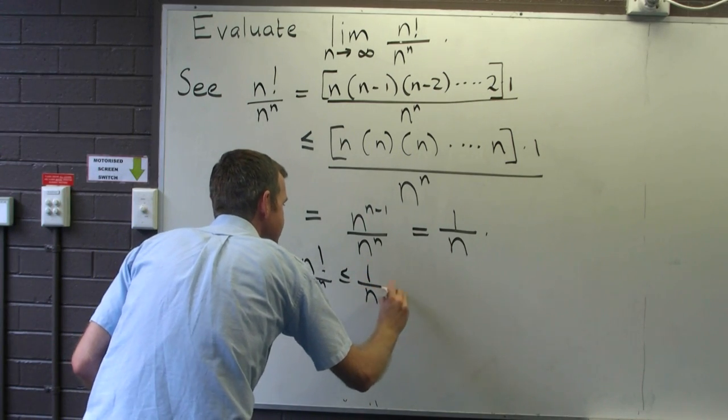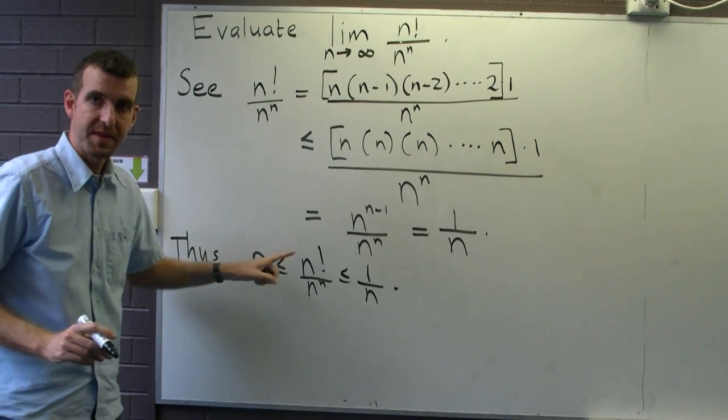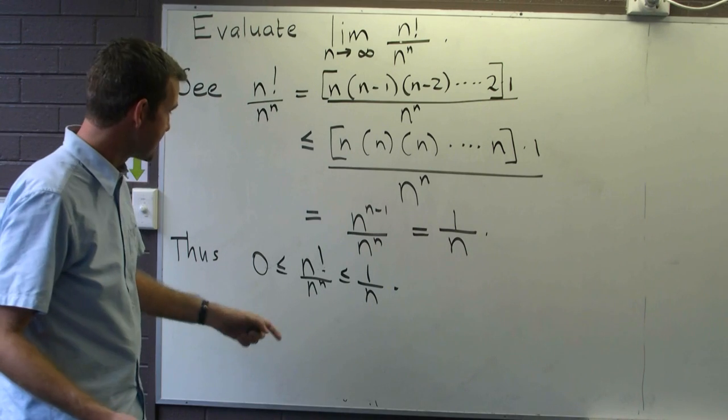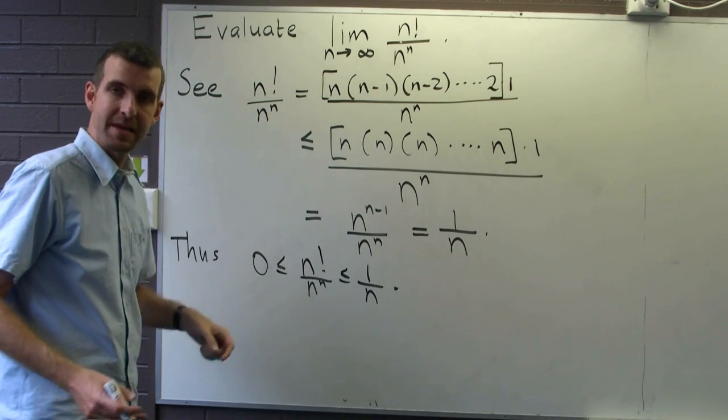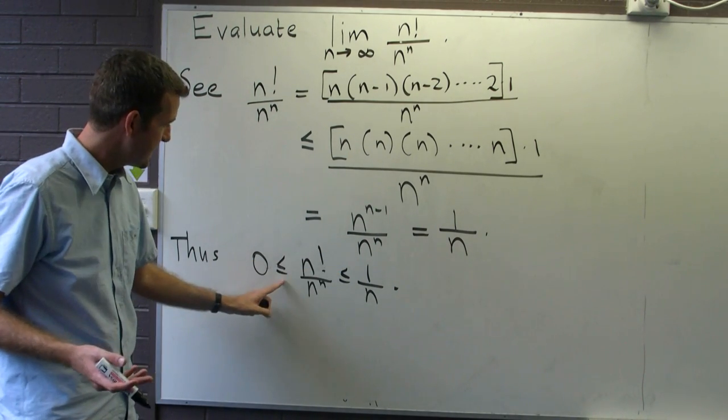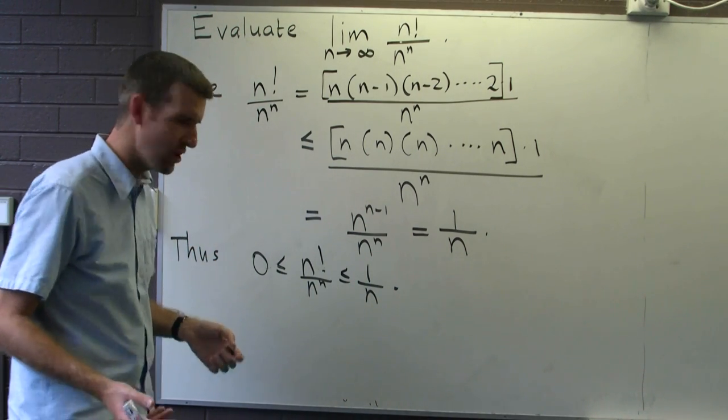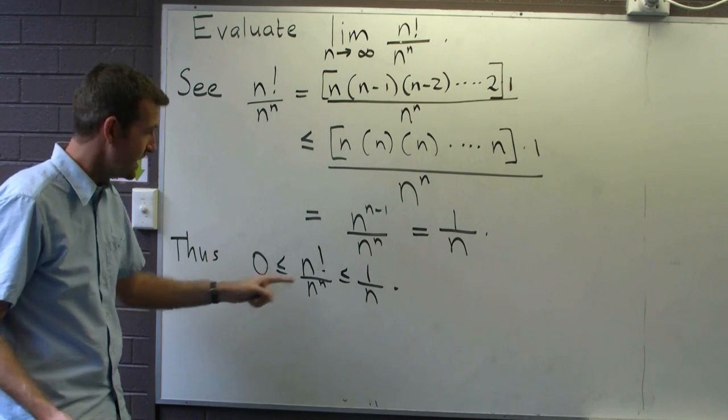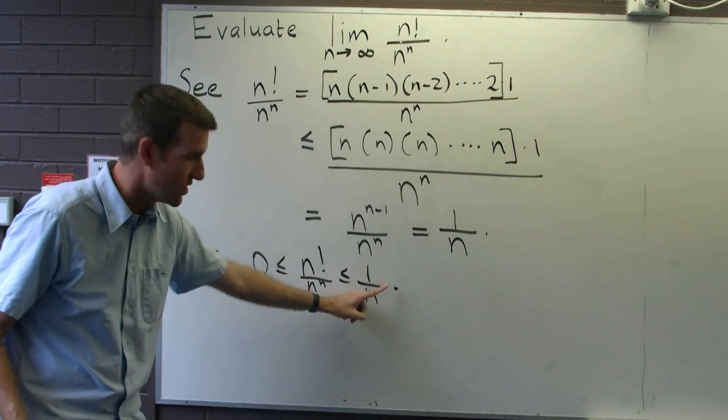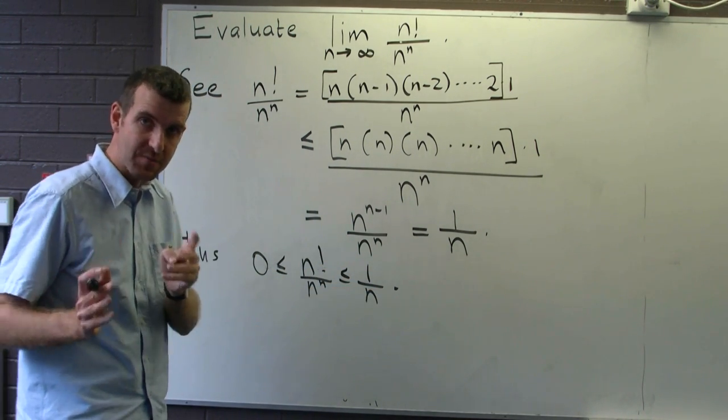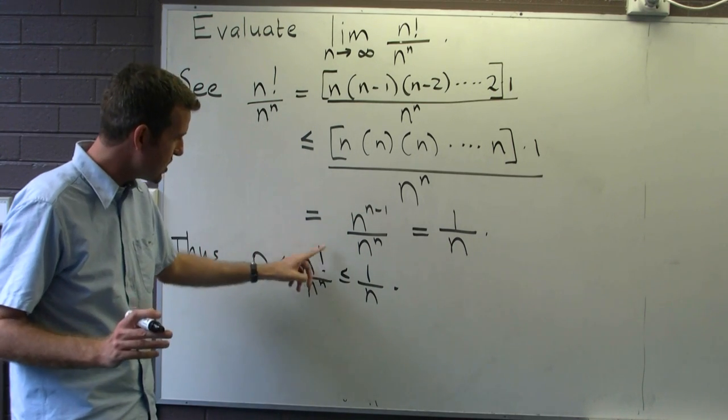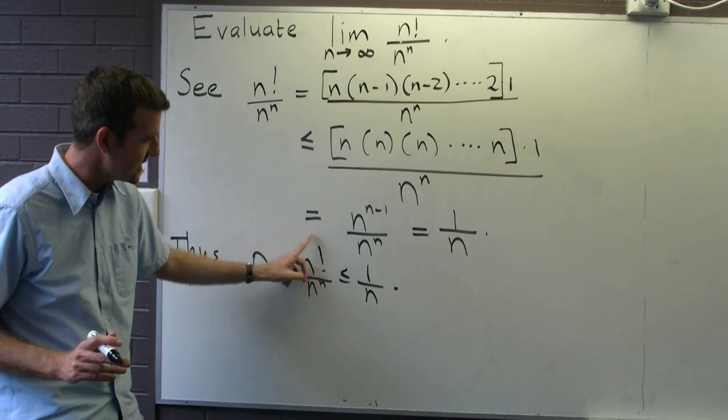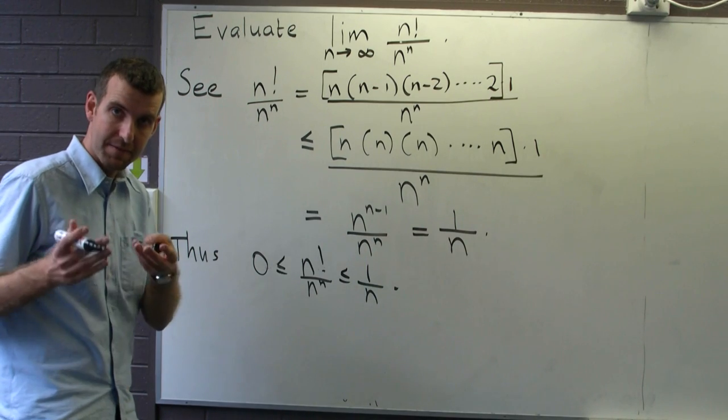So for each n, this is true. Now, the pinching theorem says we can take limits everywhere and keep the same inequalities. How does that help us? Well, if we look at the limit on the left-hand side, it's 0. If we look at the limit on the right-hand side, that's also 0. So this is where we want to be. We can then determine the limit of our sequence, the thing in the middle, it must be 0.